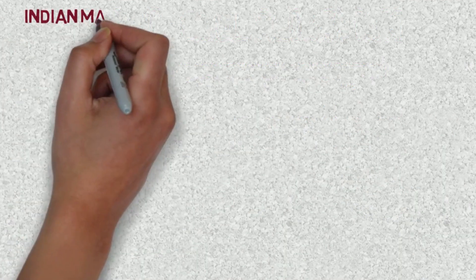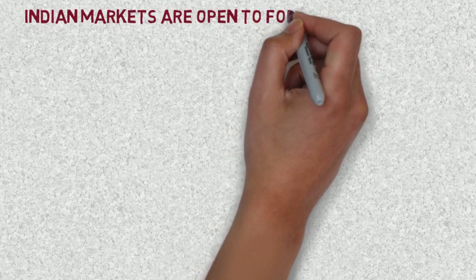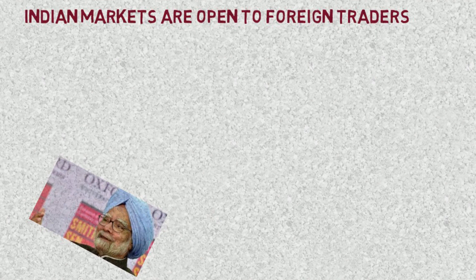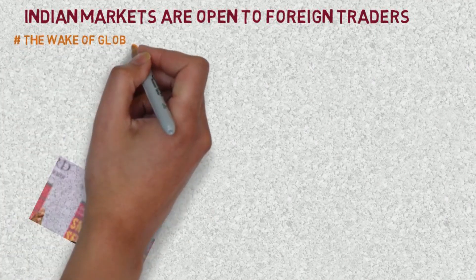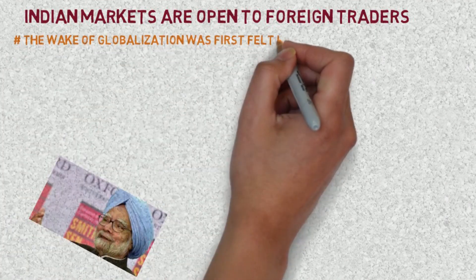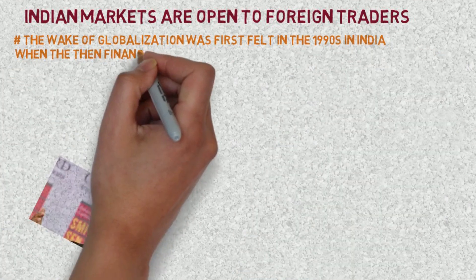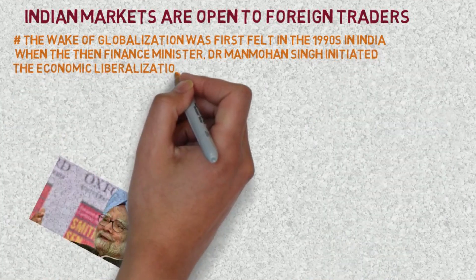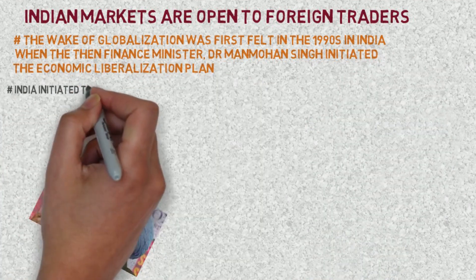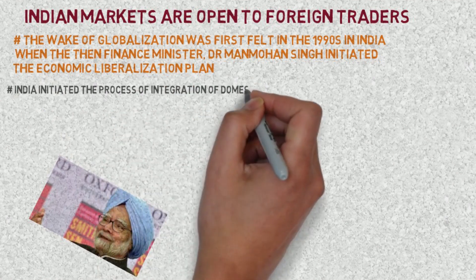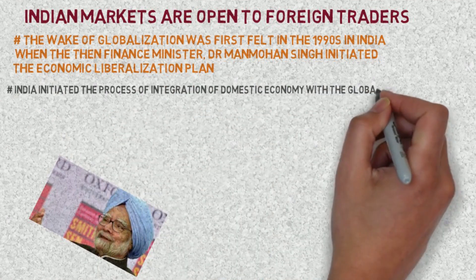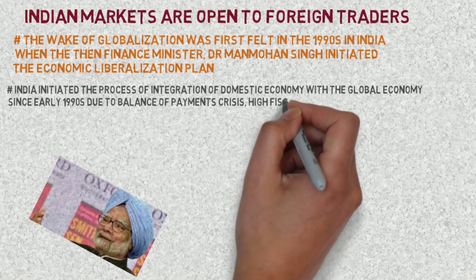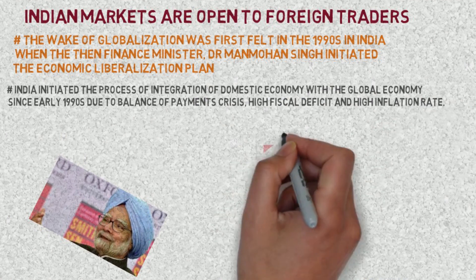Indian markets are open to foreign traders. The wake of globalization was first felt in the 1990s in India, when Finance Minister Dr. Manmohan Singh initiated the economic liberalization plan. India initiated the process of integration of the domestic economy with the global economy since the early 1990s, due to a balance of payments crisis, high fiscal deficit, and high inflation rate.